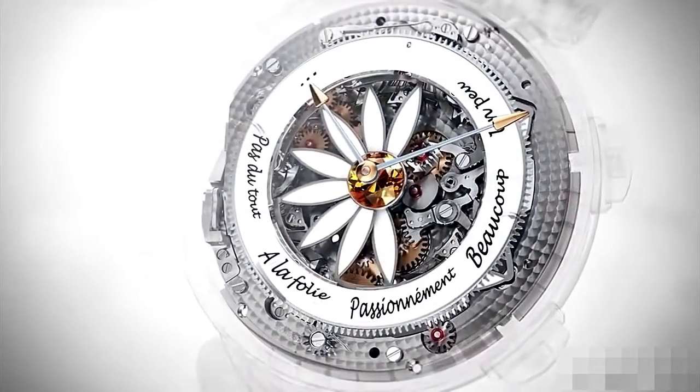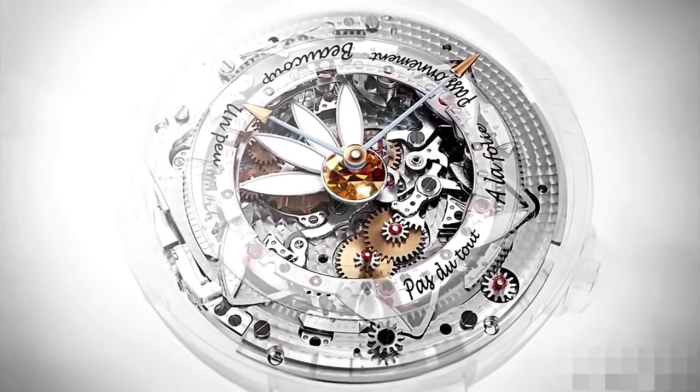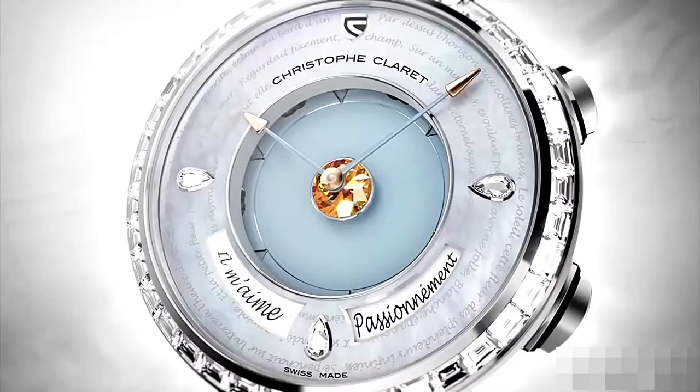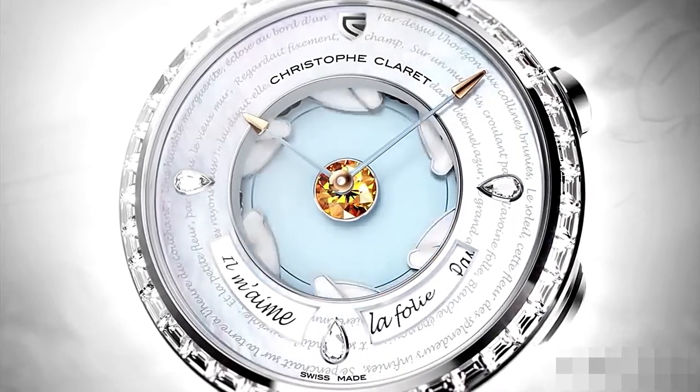Pressing the pusher at 2 o'clock activates the central flower where petals fall away and the answers appear in French, the universal language of love. A little, a lot, passionately, madly, or not at all, responds the watch.